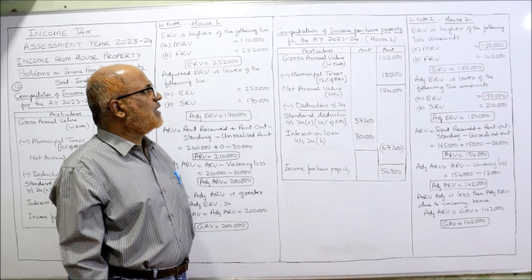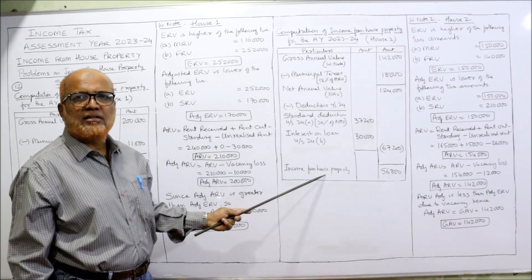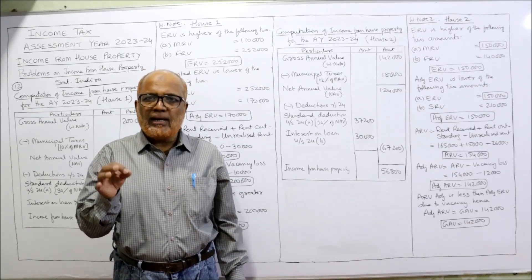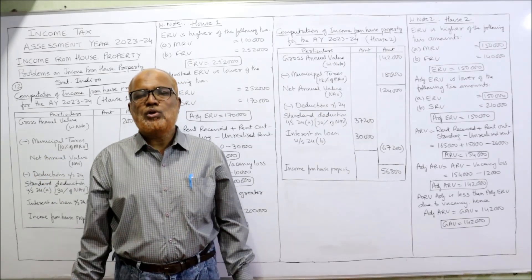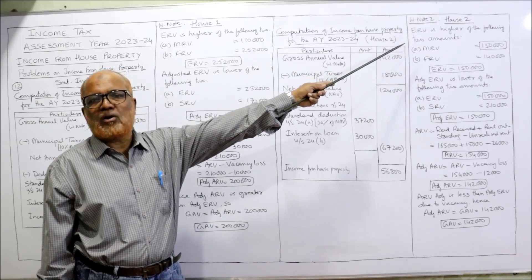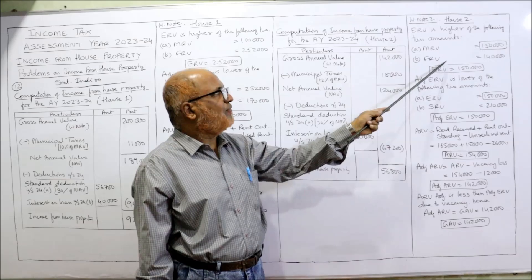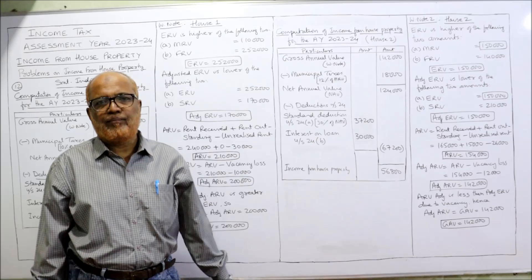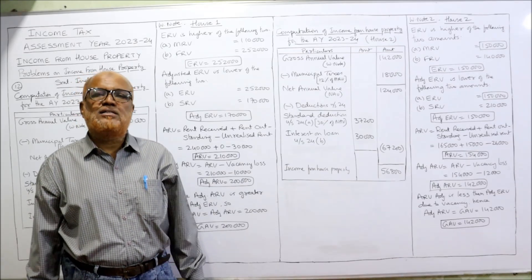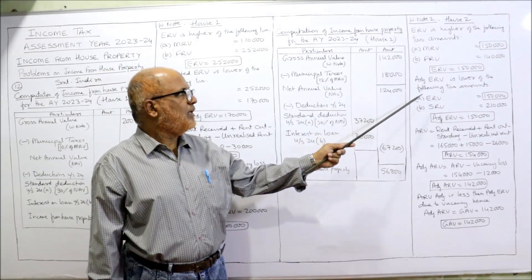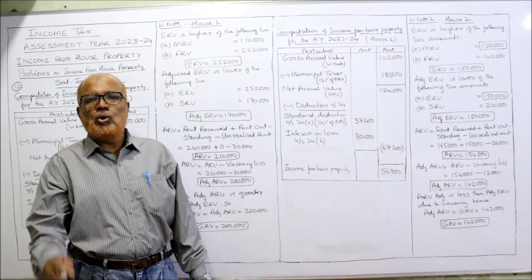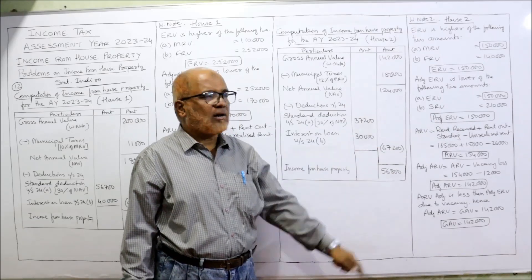Now we move to house number 2 — similar procedure. In the working note we calculate the GAV. ERV is the higher of MRV and FRV: MRV is 1,50,000 and FRV is 1,40,000, so ERV is 1,50,000. The house is again governed by Rent Control Act because SRV is given. Adjusted ERV is the lower of ERV or SRV: ERV 1,50,000 and SRV 2,10,000; the lower is 1,50,000. So adjusted ERV is 1,50,000.